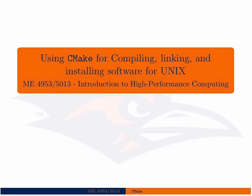In this lecture, we're going to talk about using CMake for compiling, linking, and installing software on a Unix machine. This is specific instructions for a Unix machine, because CMake is able to generate makefiles, Xcode projects, or Visual Studio projects. But we're going to use it much in the same way as a traditional configure, make, install. It's worth knowing about because it is the latest and greatest in build system management for large software projects.